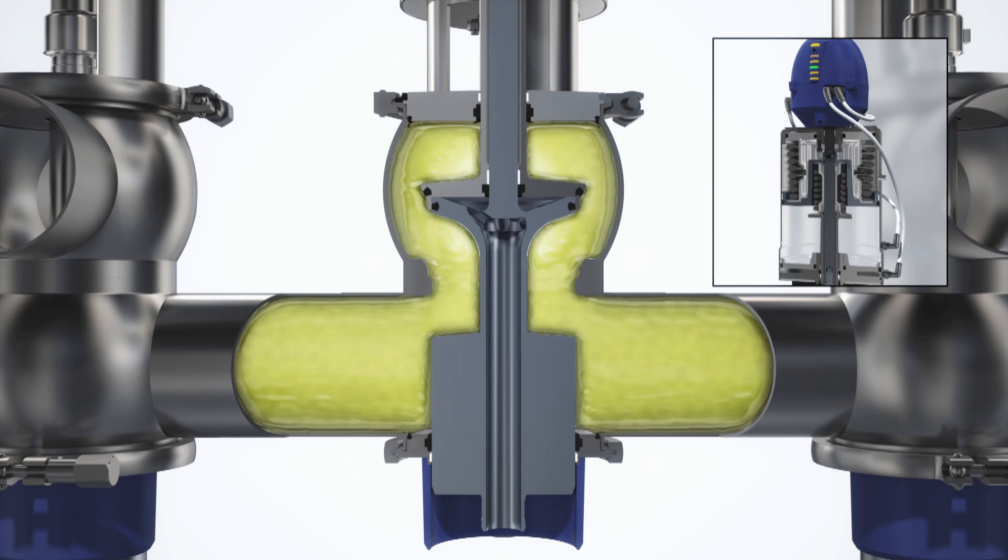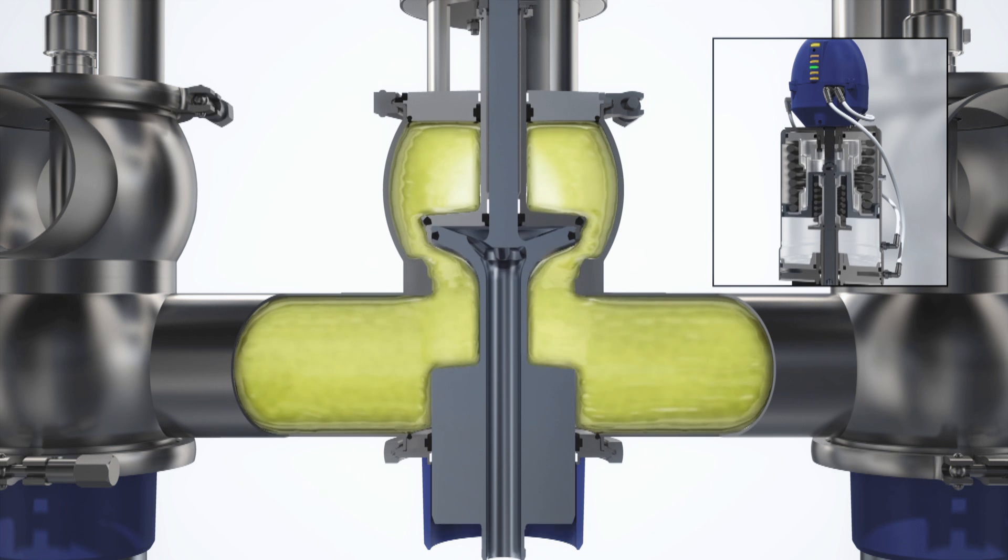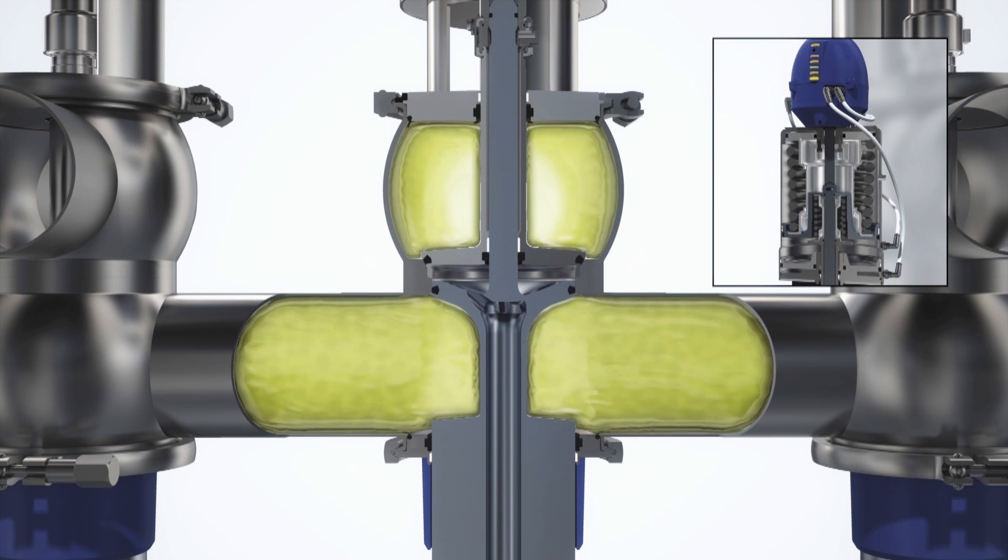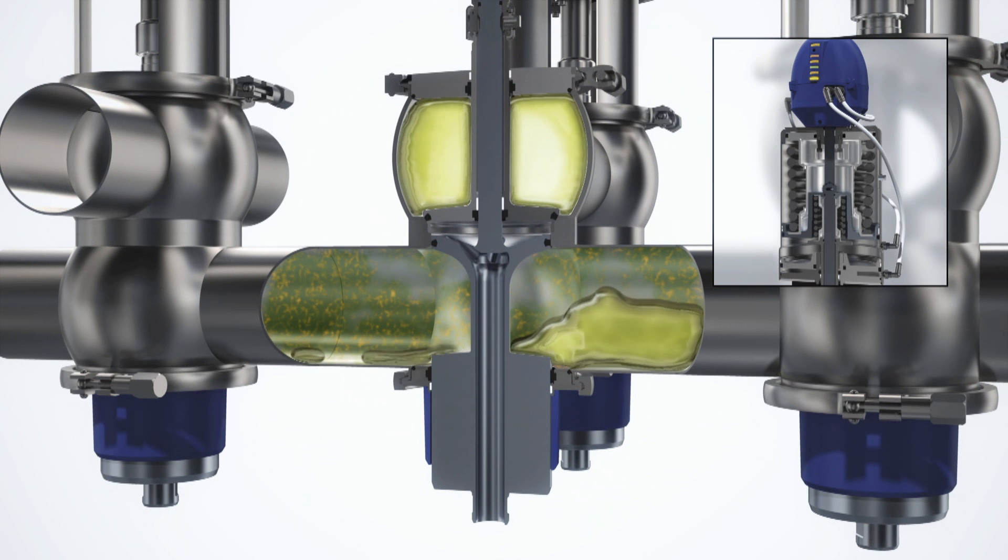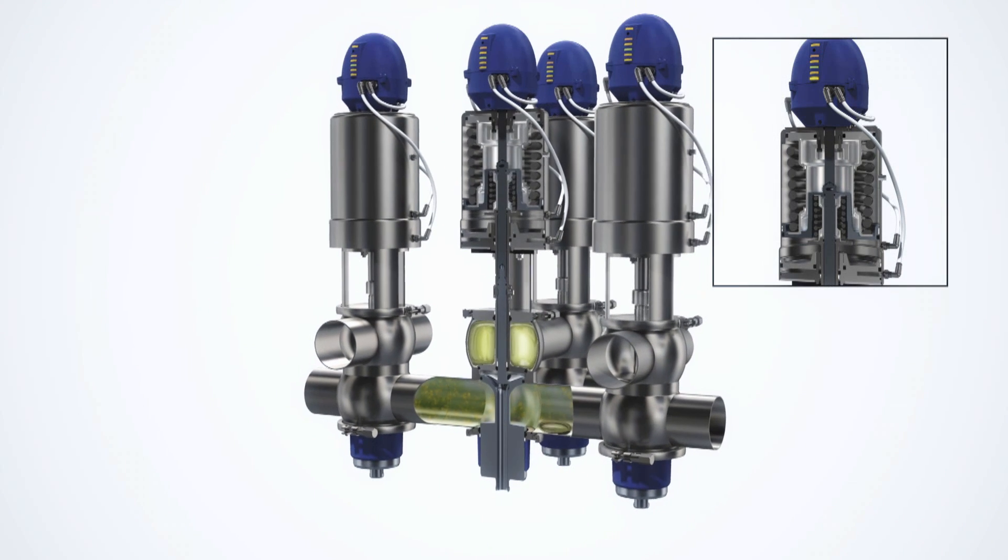Closing the valve is also a two-step movement. First, the upper plug moves into the axial seat. Then the lower plug, with its radial seal, is guided into position, providing long-lasting operation.